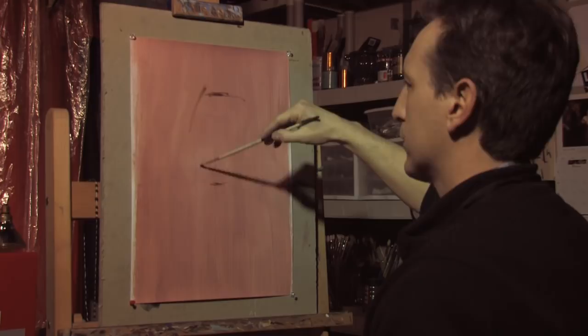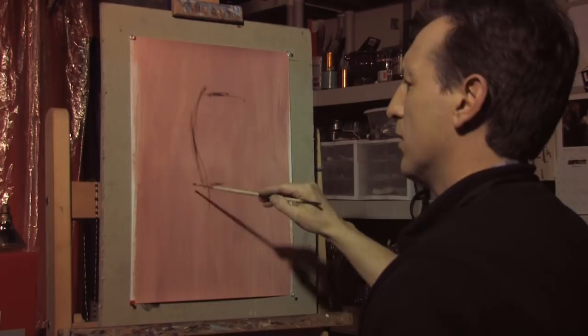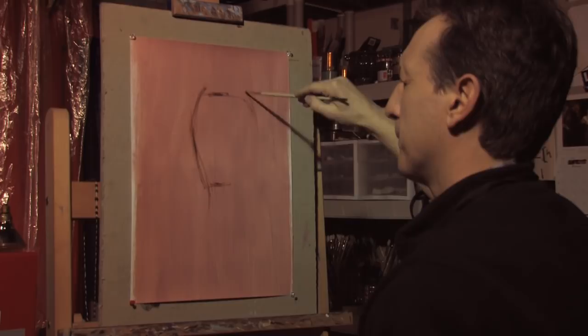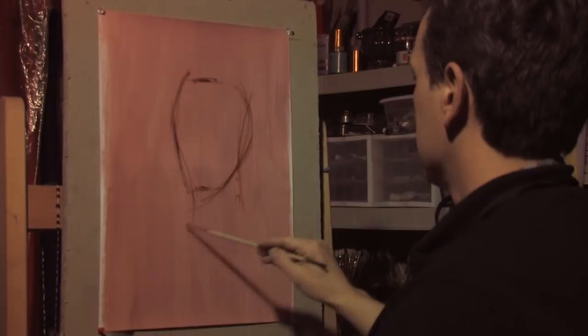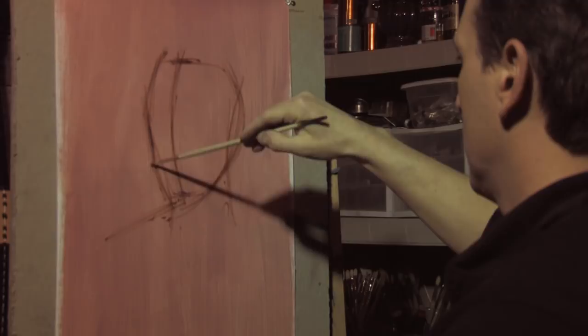I'll do this a little smaller than usual, because of the time constraints. I'm taking that neutralized orange and using that to draw with. At least some of the outside edges in.